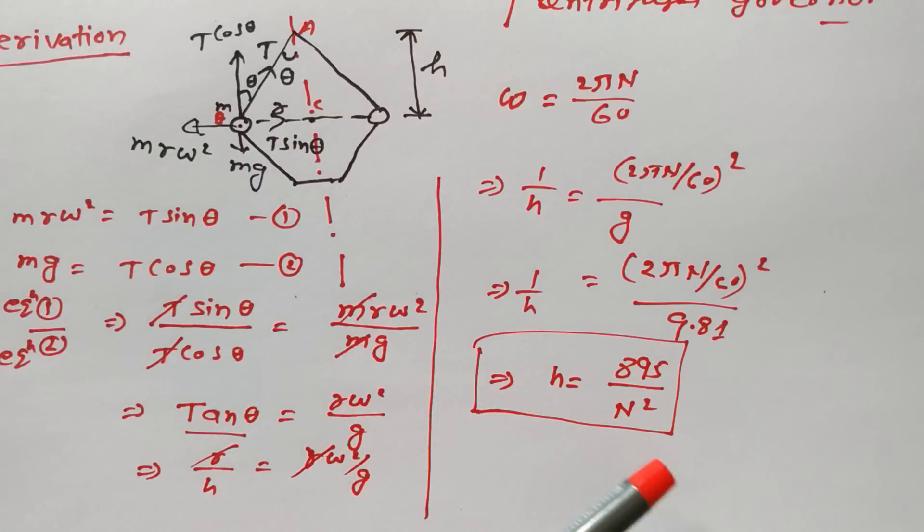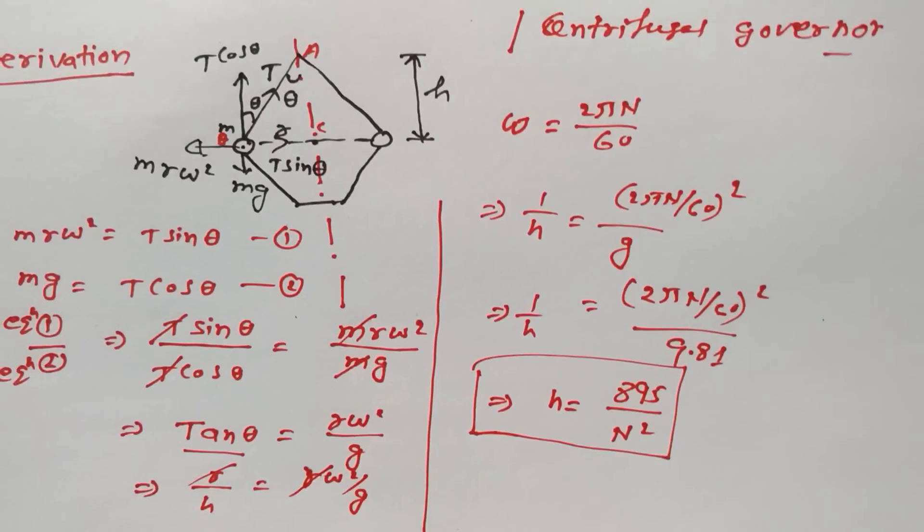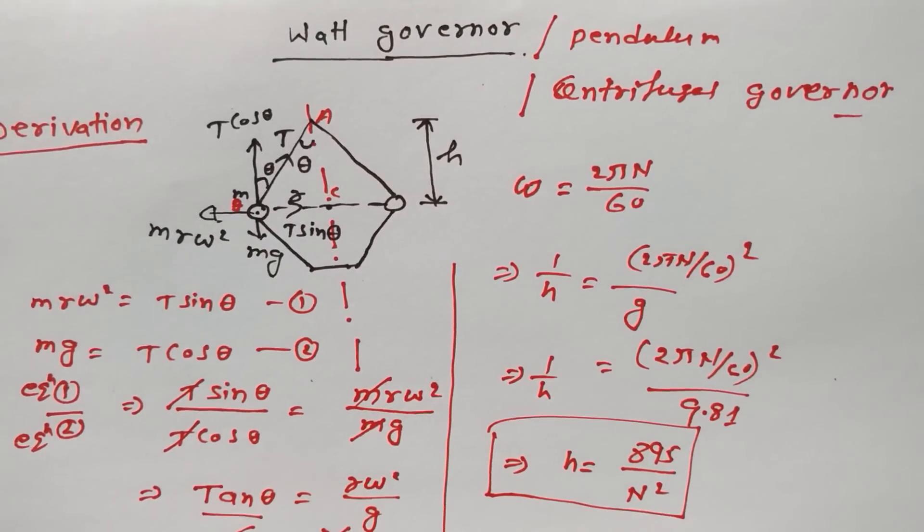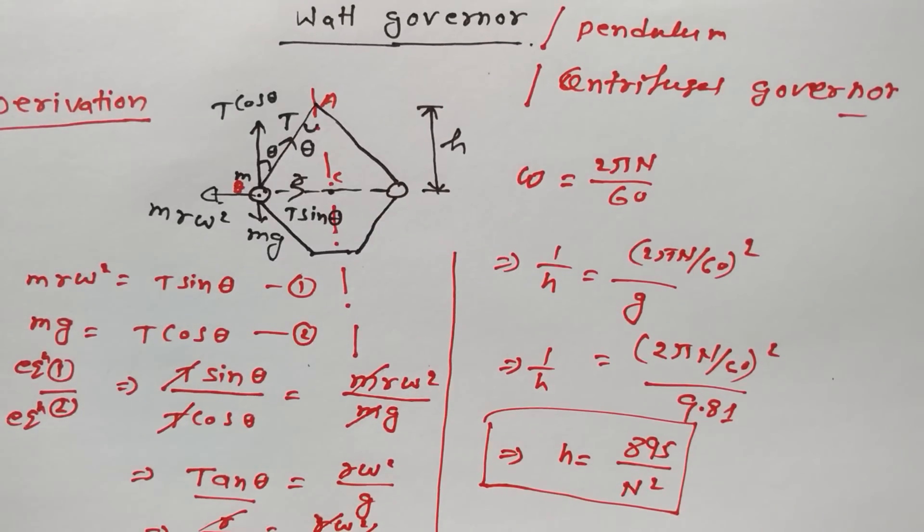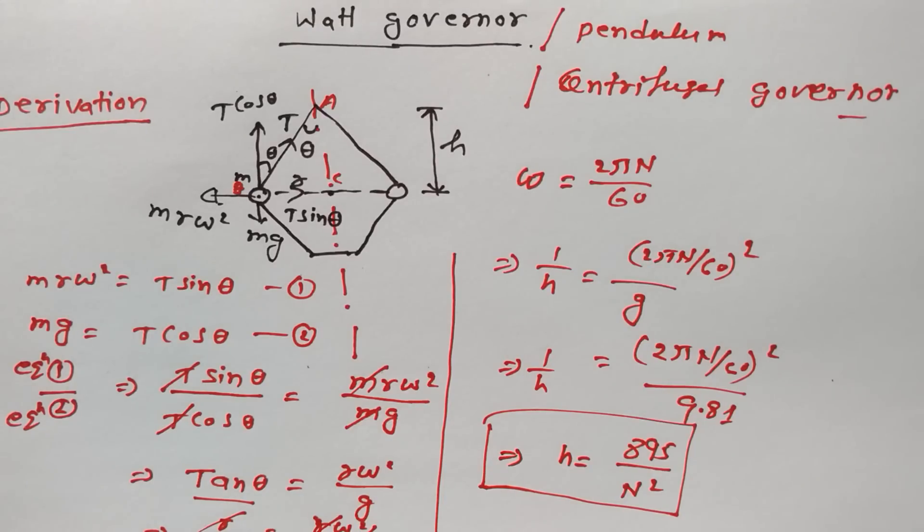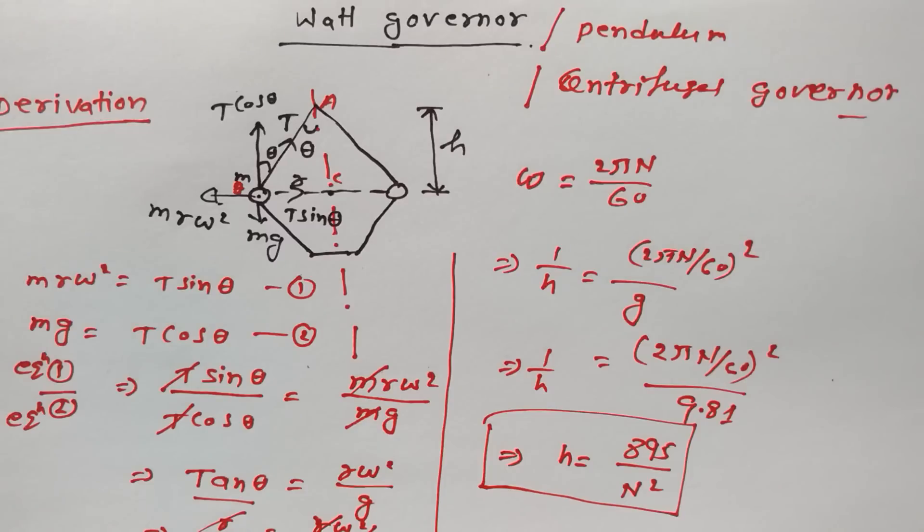After simplifying, h = 895/n², where h is height of the governor and n is number of RPM - revolutions per minute. This is all about Watt Governor derivation, how to derive and how to find out height of the governor through this derivation. If you understand this, then you don't have any problem to solve numerical problems related to Watt Governor.